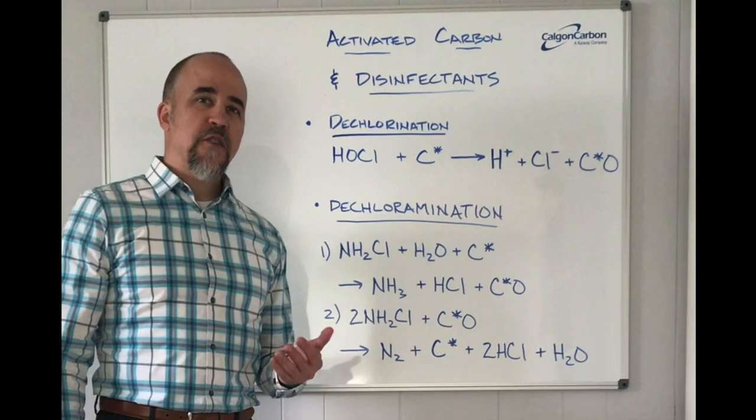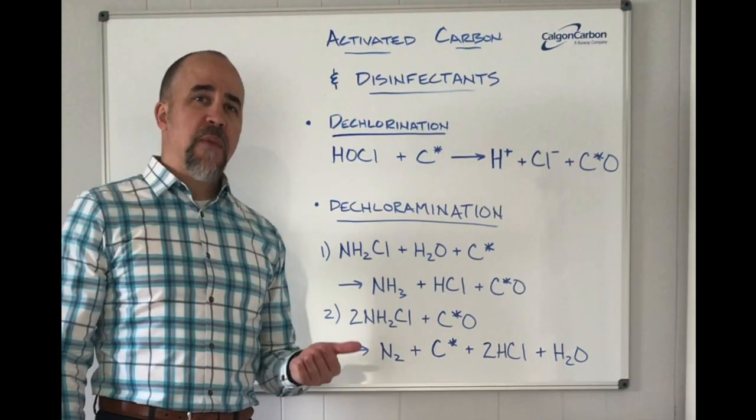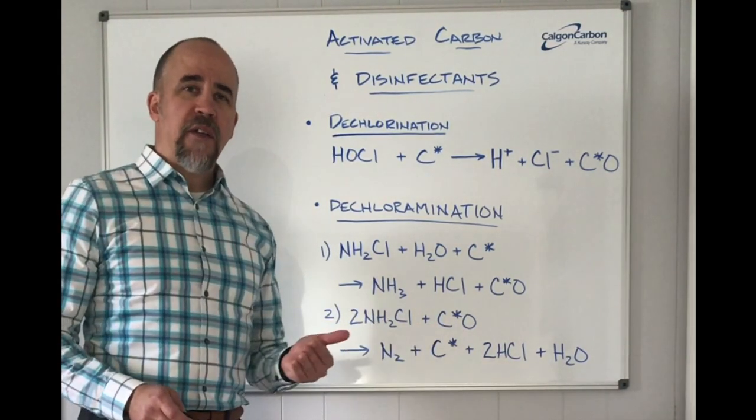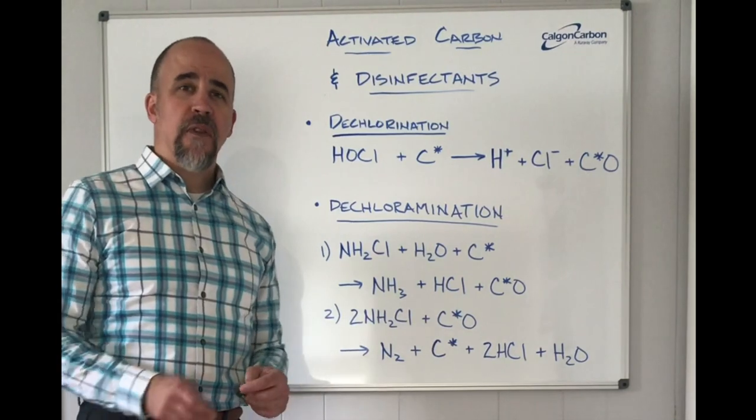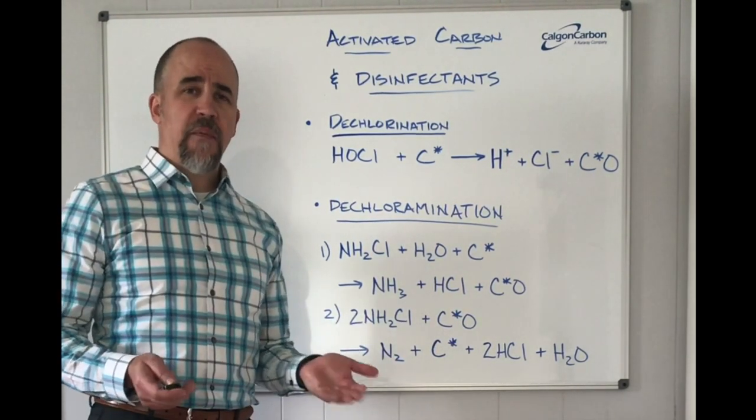In tap water what many consumers find objectionable are the residual disinfectants. This can be either chlorine or chloramine. These two are added to assure that the water traveling to your home maintains its quality through the distribution system. However, the smell and taste of these can be objectionable.